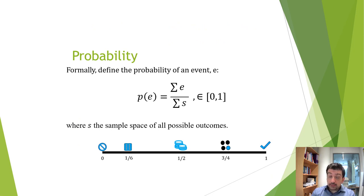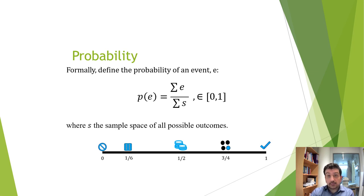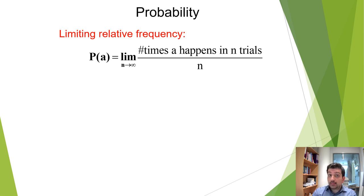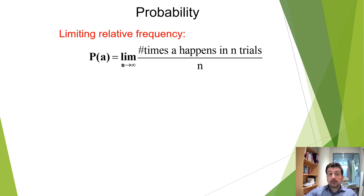Bayesian inference is based on probabilities, so let's take a step back and revisit the mathematical notion of probability. It is defined as a ratio between the number of times a particular event is observed over the total number of trials that cover all possible events or outputs. When you have a die, the probability of getting one out of six sides is one over six; if we flip a coin, the probability of getting heads or tails is 50%. To mathematically define the probability more rigorously, we include the limit when the number of trials n goes to infinity — we assume the experiment has been repeated an infinite number of times.